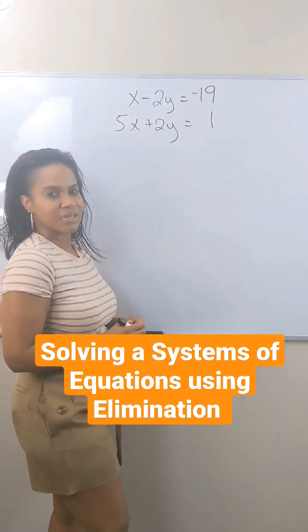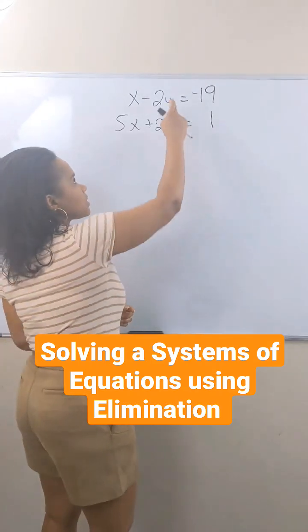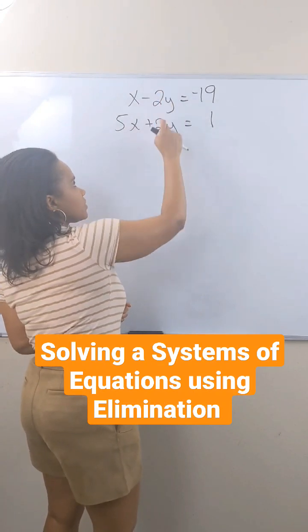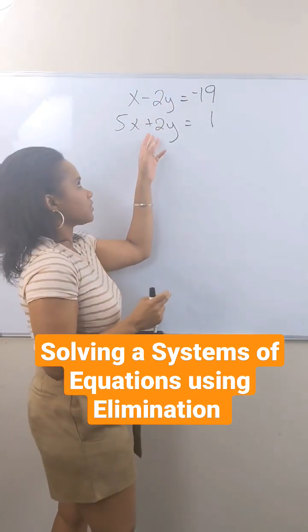We want to solve this system of equations using the elimination method. Now what I want to look for is opposite coefficients, which is what I have here. I have a negative 2y and a positive 2y.